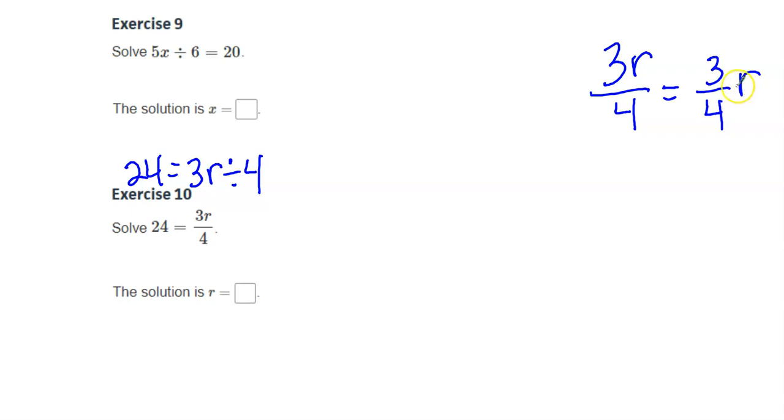Because if I put this r, if I put a little dot between them, and I multiply, and I put the r over 1, because any number divided by 1 is just itself. And if I multiply across, I get 3 times r is 3r, and 4 times 1 is 4.